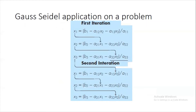Since the system is diagonally dominant, we can apply the Gauss-Seidel method. The method says that given an initial guess, you transform the system into a standard iterative form. Let me explain this with an example — after working through it, the formula will become very clear.